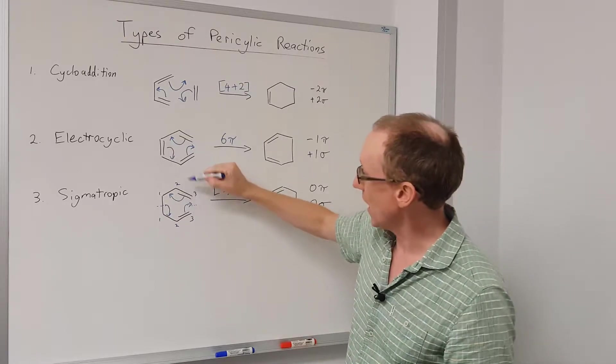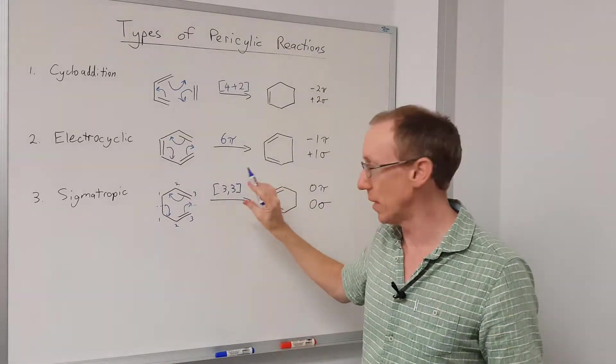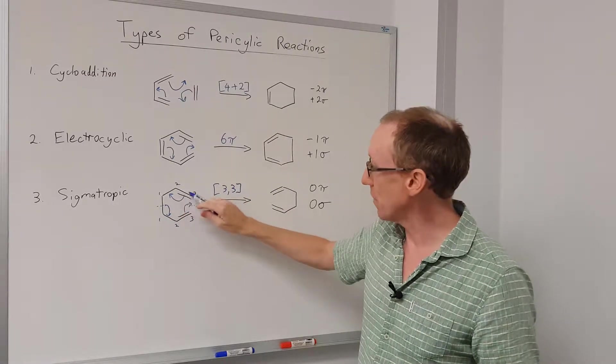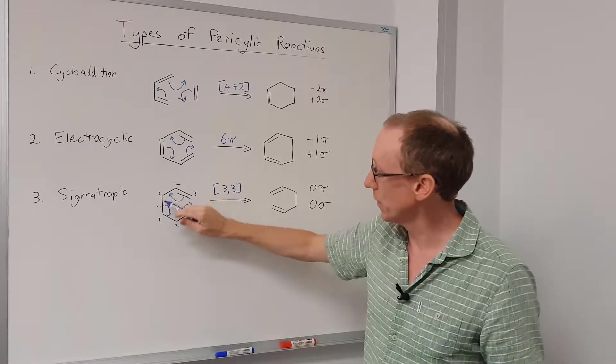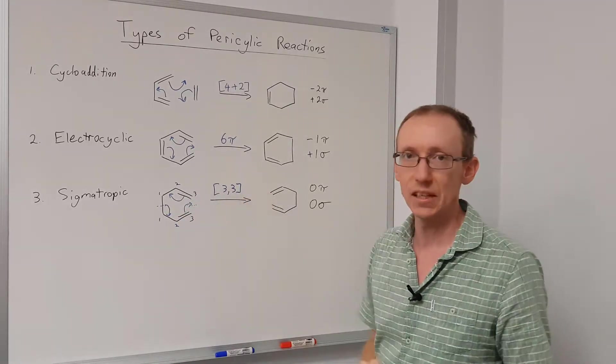Now if we have extra atoms hanging off that, it doesn't change the nomenclature. It's only the atoms involved in that cycle that's involved in the actual transition state that goes into the numbering.